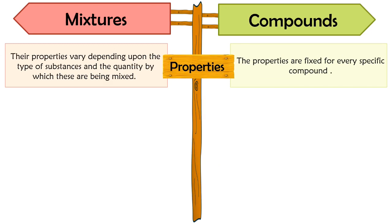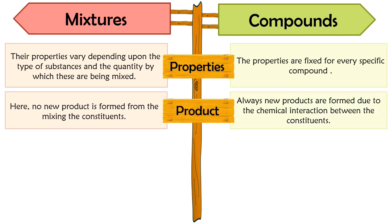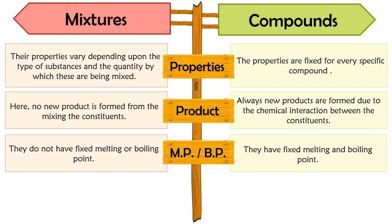Properties: the properties of mixtures may vary depending upon the type and quantity of substances that are mixed. In comparison, the properties of compounds are fixed due to the definite ratio of the elements. Product: no new product is formed from mixing the constituents of a mixture. In contrast, during compound formation, a new product is always formed which has totally different properties than those of the constituent elements. Melting point and boiling point: mixtures do not have fixed melting or boiling points, whereas compounds have fixed melting and boiling points.